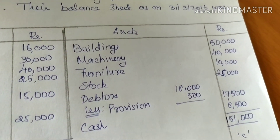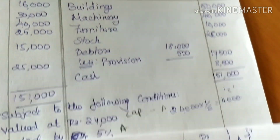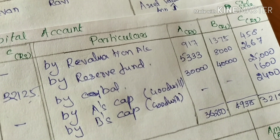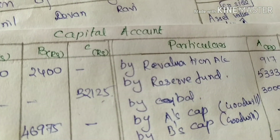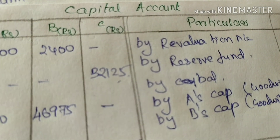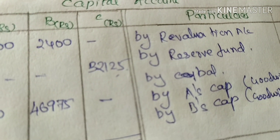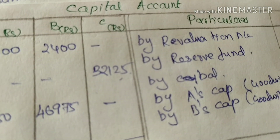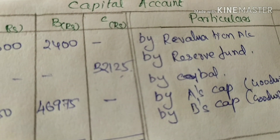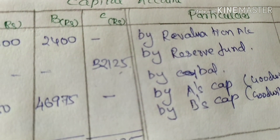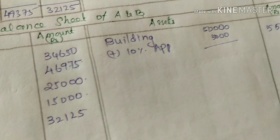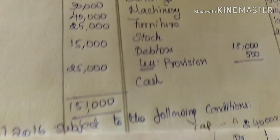On the asset side: building was 50,000, appreciated by 5,000, so the new value is 55,000. Next is machinery.